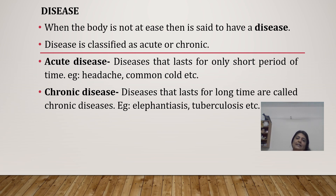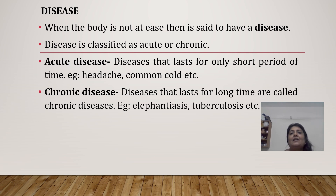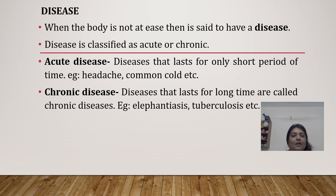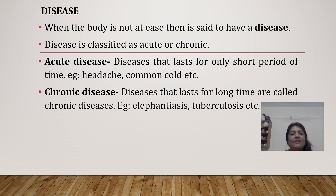Depending on the duration, disease is classified as acute or chronic. Acute disease means a disease that lasts only for a short period of time — for example, headache, common cold, etc. Chronic diseases are diseases that last for a long time. For example, elephantiasis and tuberculosis. These diseases last for a long time and are called chronic diseases.